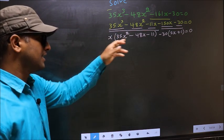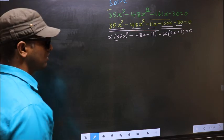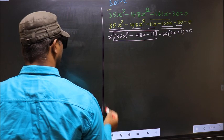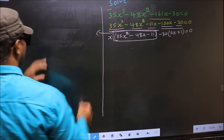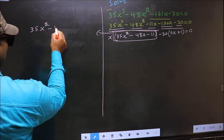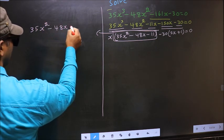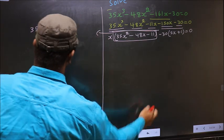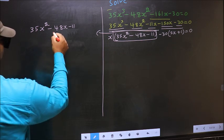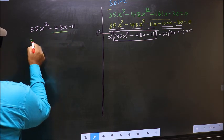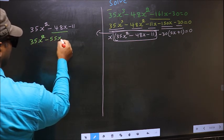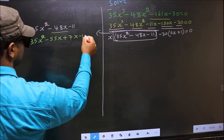In this equation we have come across a quadratic, so I will factorize 35x² minus 48x minus 11. To factorize this we should split the middle term minus 48x. In place of minus 48x I write minus 55x plus 7x minus 11.